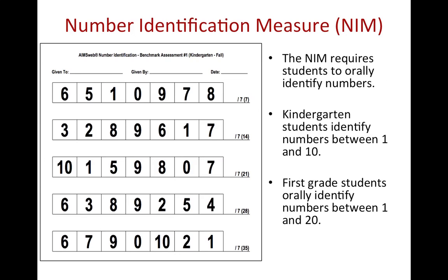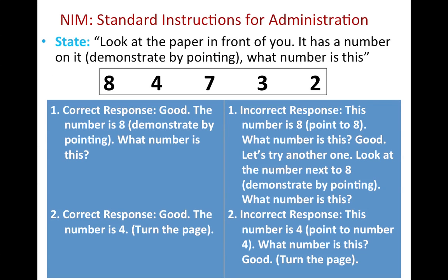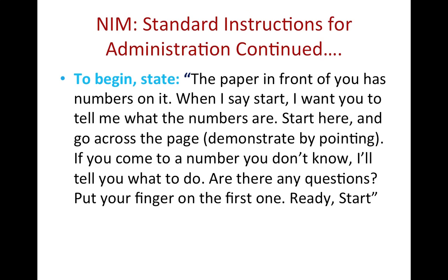The Number Identification Measure requires students to orally identify numbers. Kindergarten students will identify numbers between 1 and 10, and first grade students will identify numbers between 1 and 20. The instructions state: 'Look at the paper in front of you. It has a number on it. What number is this?' You would then follow the printed guidelines depending upon whether the student gives a correct or incorrect response. Once you have completed these practice steps, you are ready to begin the timed administration. Read the instructions aloud: 'The paper in front of you has numbers on it. When I say start, I want you to tell me what the numbers are. Start here and go across the page. If you come to a number you don't know, I'll tell you what to do. Are there any questions? Put your finger on the first one. Ready? Start.' Once the student begins, you would start timing.